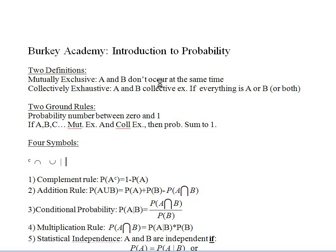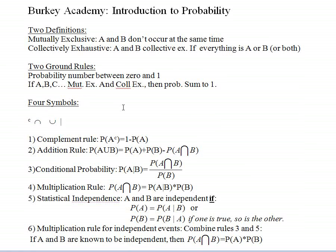Now one more set of preliminaries. Some symbols that we're going to see quite a bit as we go through are a C, that is a superscript C, an upside-down U, a U, and a vertical bar.